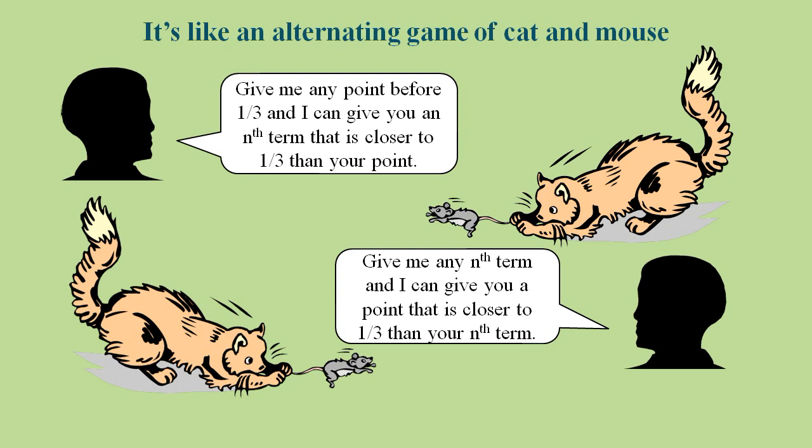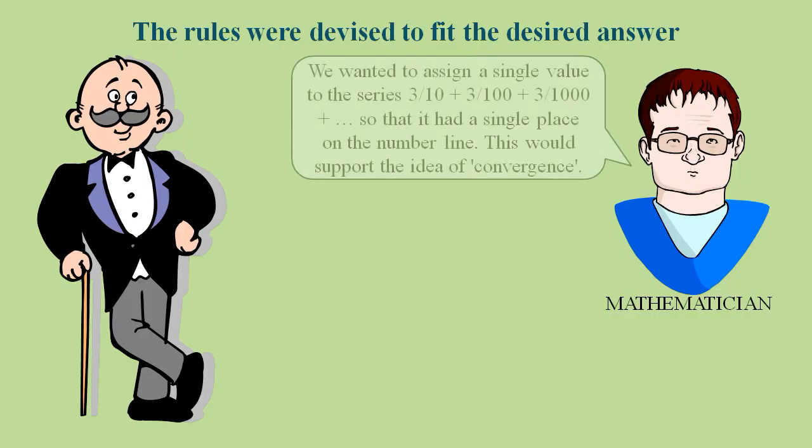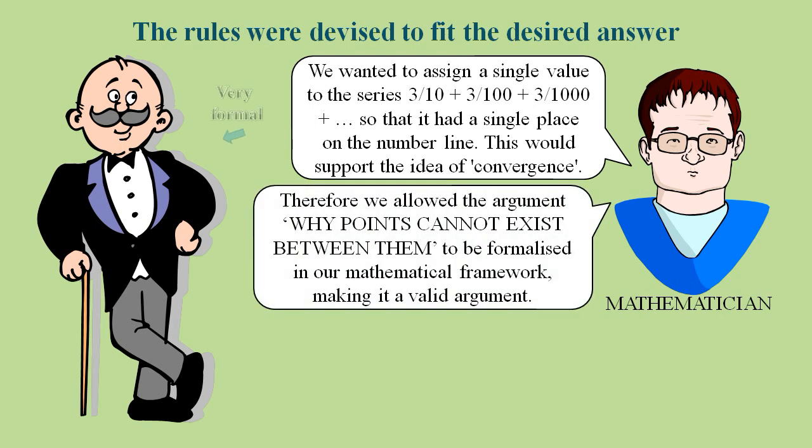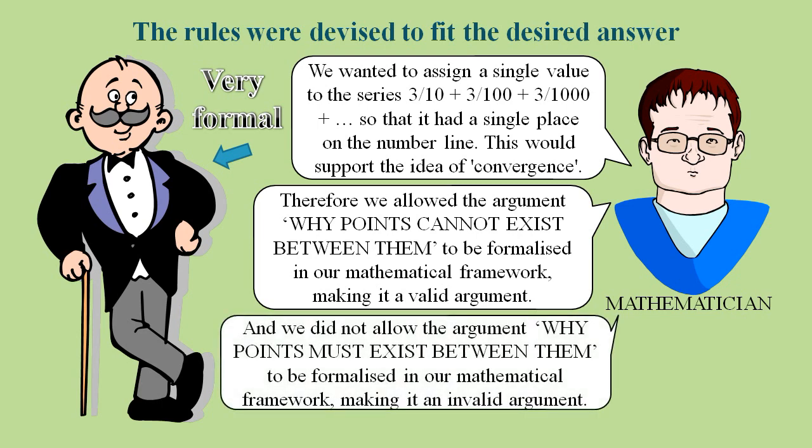This begs the question, how can there be any value in mathematical proof when you are allowed to make up all the axioms and make up the rules of logic in order to prove anything you want to? And the reason they wanted this particular result was to support their notion of real numbers through this theory of convergence. They got away with this approach by allowing one side of the argument to be written down using mathematical notation and by not letting the other side of the argument be written down in a formal fashion. They could then claim it was an invalid argument.